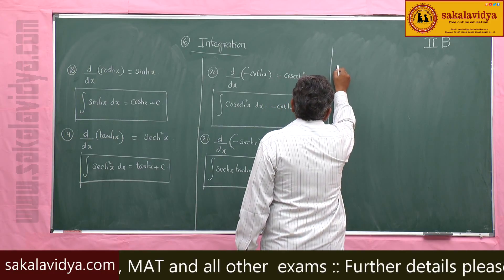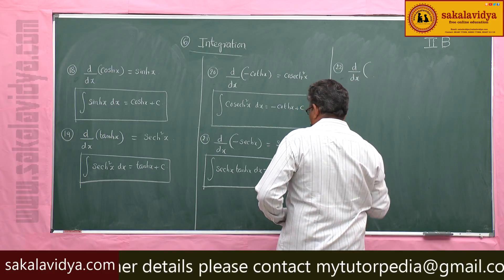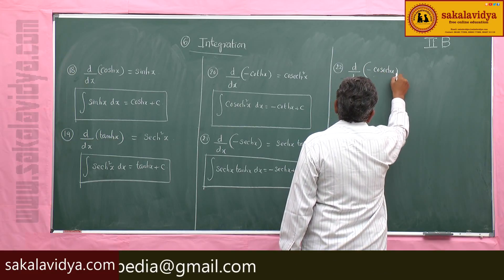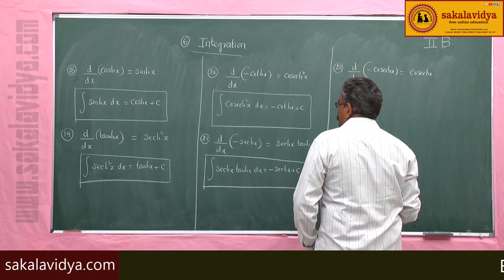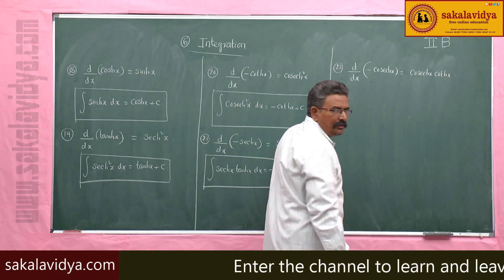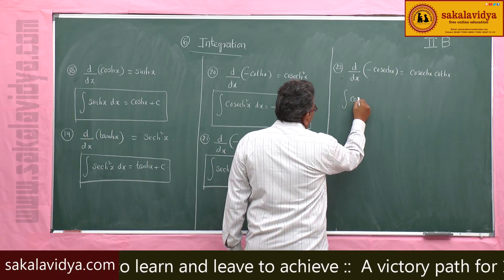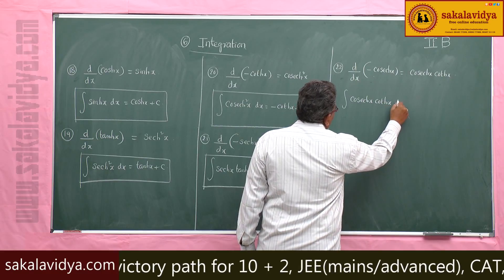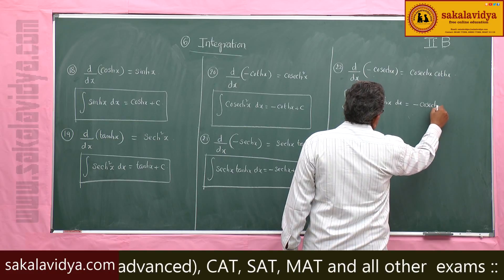Next, d by dx of minus cosech x is cosech x coth x. So, integral of cosech x coth x dx is equal to minus cosech x plus c.